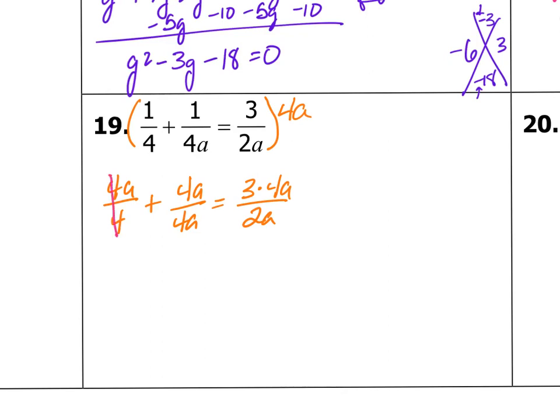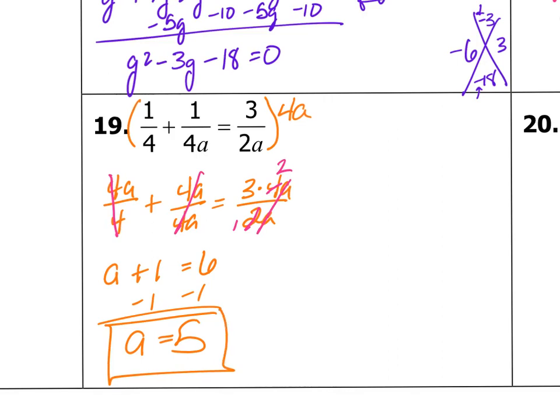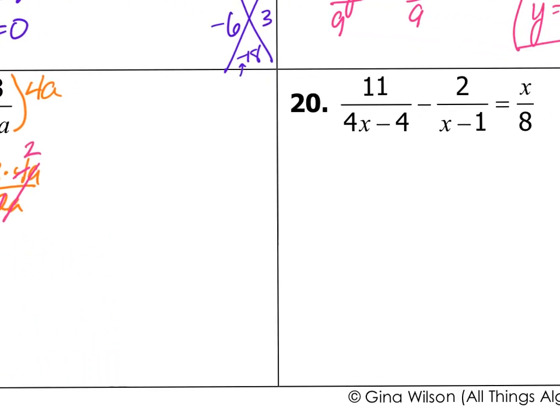So I get 4a divided by 4 plus 4a divided by 4a equals 3 times 4a divided by 2a. So the 4s make a 1, the 4a's make a 1, the a's make 1. 2 goes into 2 once and into 4 two times. So I get a plus 1 equals I think that would be 6. And then I'm going to subtract 1. So a equals 5. And that doesn't make my denominator 0. So I get a equals 5. I'm so sorry, this is the first time I've actually said that. So if you actually have any questions, please contact us. We'll be glad to help you out.